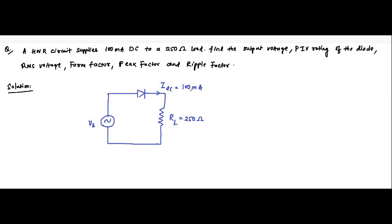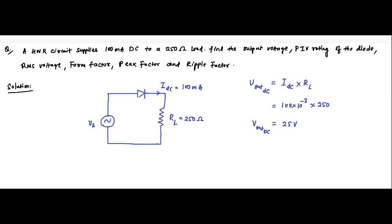Now, you remember the formula for the DC output voltage for a half wave rectifier — it is equal to IDC into RL. Here both of them are given. IDC is equal to 100 milliampere, converting it into ampere it is 100 × 10⁻³. RL is equal to 250 ohm. That is equal to 25 volts, which is the DC output voltage — the first parameter which has been asked.